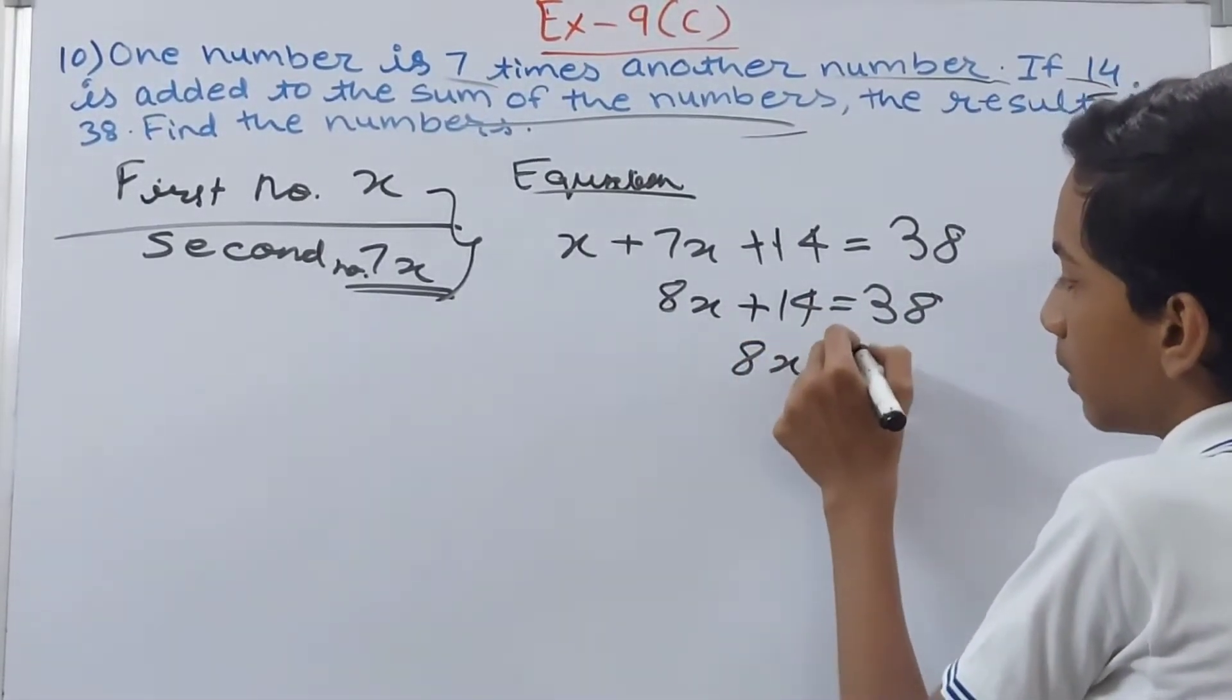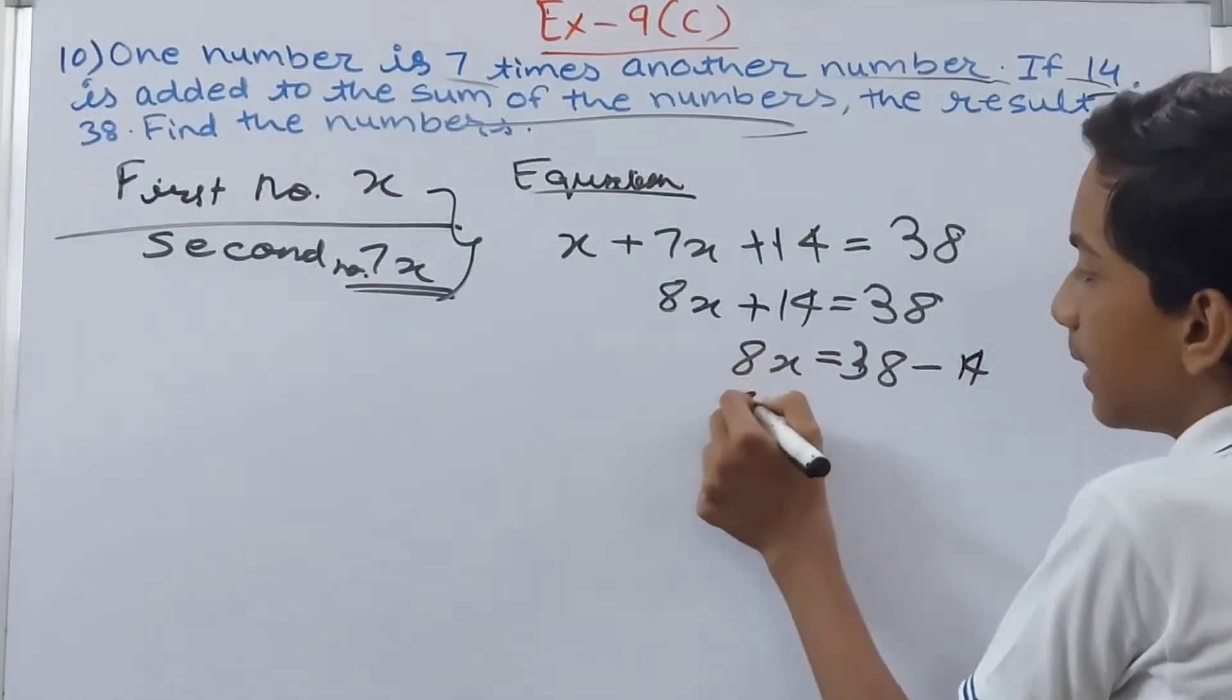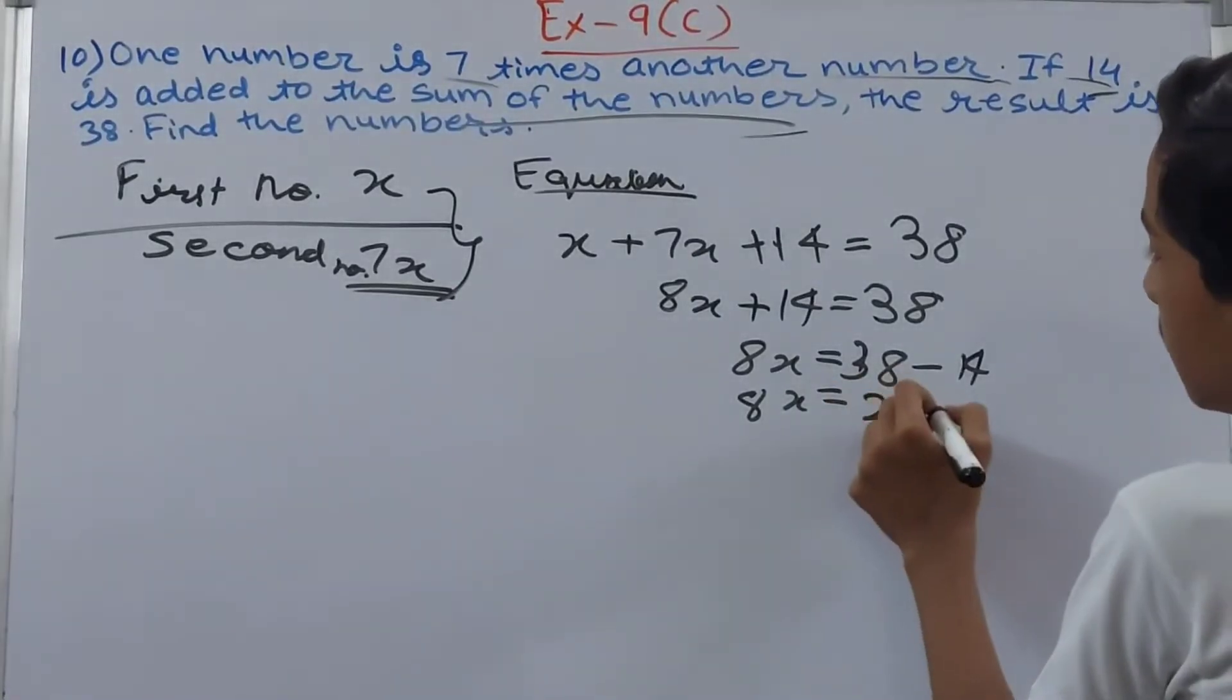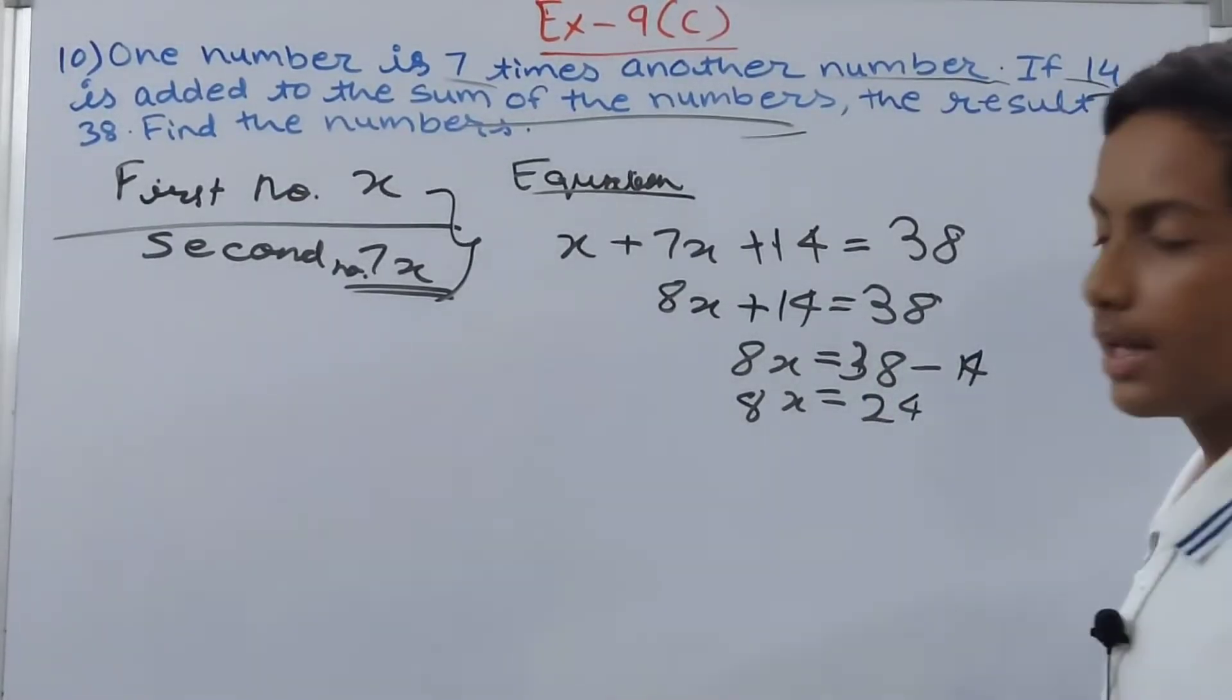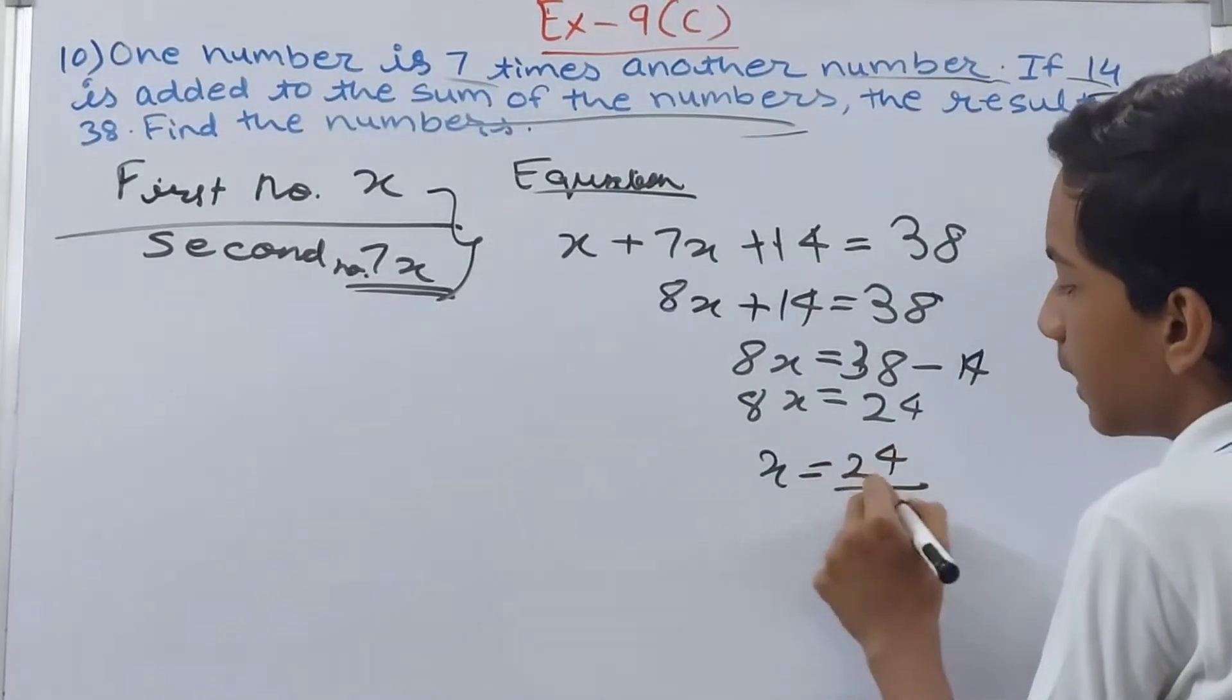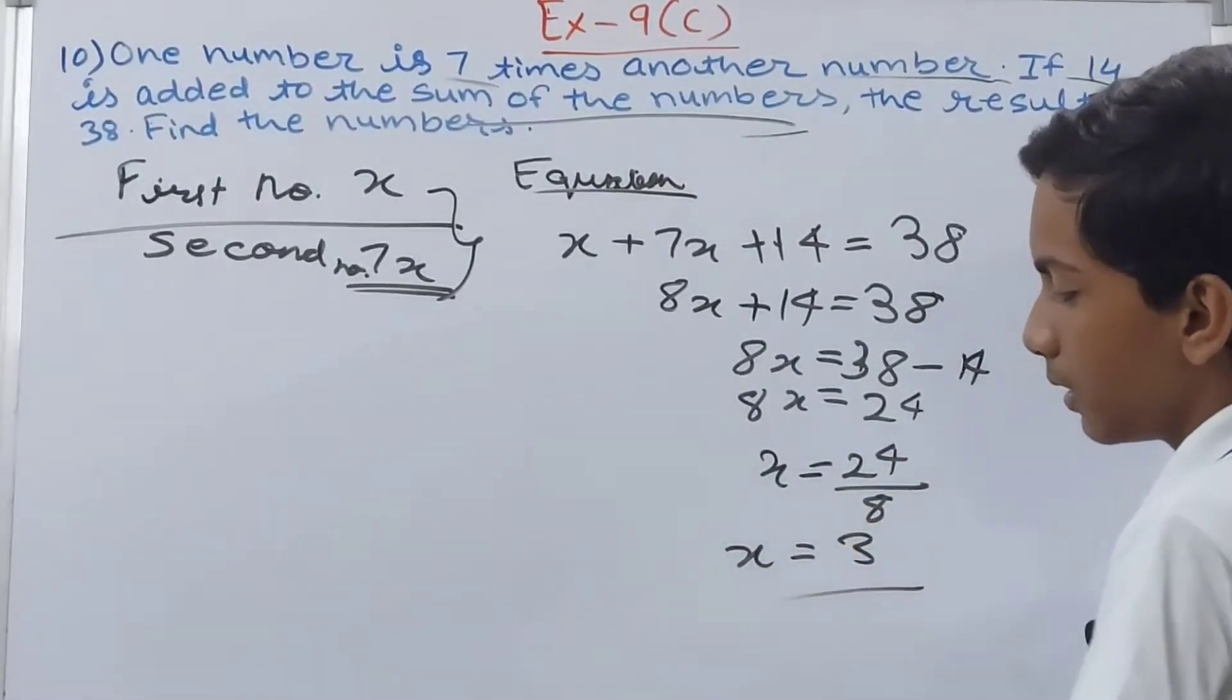And 8x is equal to, in reality it is equal to—sorry—it's equal to 24. And then x is equal to 24 upon 8, so x is equal to 3.